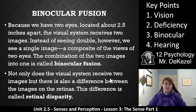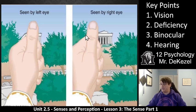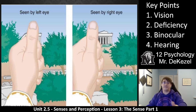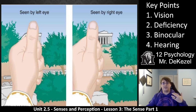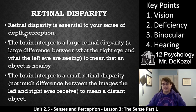Not only does the visual system receive two images, but there's also a difference between the images on the retina, and this difference is called retinal disparity. You can demonstrate this: if you've ever held your hand up to a building or a flagpole and covered it with one eye, then closed the other eye and opened it, you'll notice it has shifted. That is because you are seeing two different images that your brain combines into one so that you do not see double.